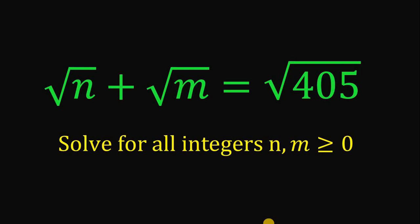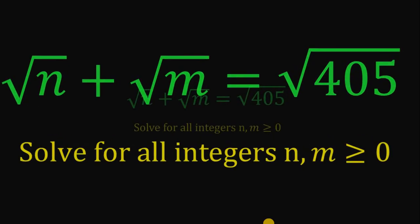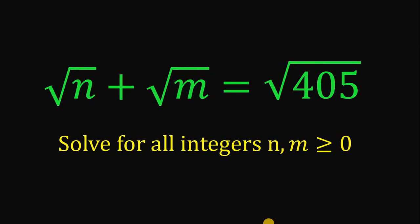Can you solve this math challenge? Here's the question. Solve for all integers n, m that is greater than or equal to 0, given that square root of n plus square root of m equals square root of 405.